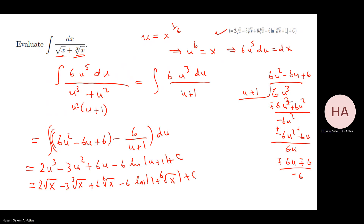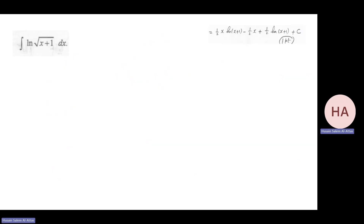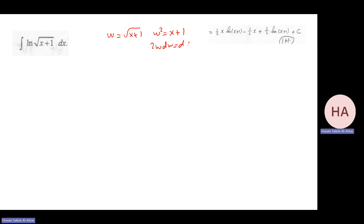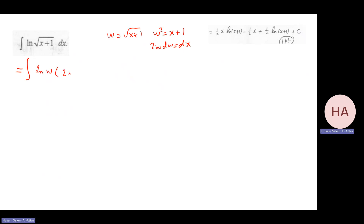Next: integral of ln(√(x+1)). It seems I need integration by parts, but first let w = √(x+1), so w² = x+1 and 2w dw = dx. Substituting, ln(√(x+1)) = ln(w), so the integral becomes ∫ ln(w) · 2w dw. Now I need integration by parts.